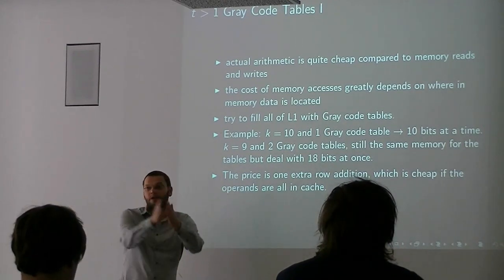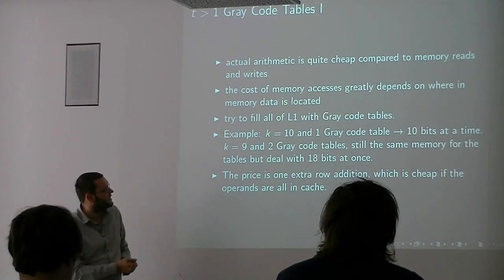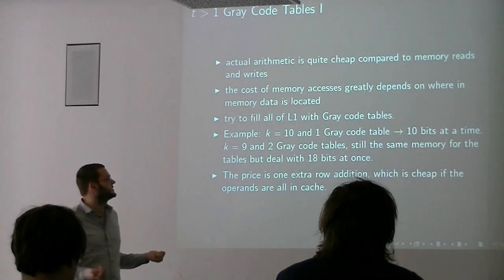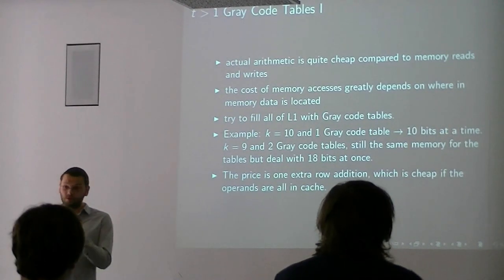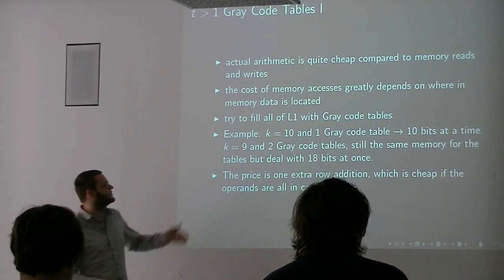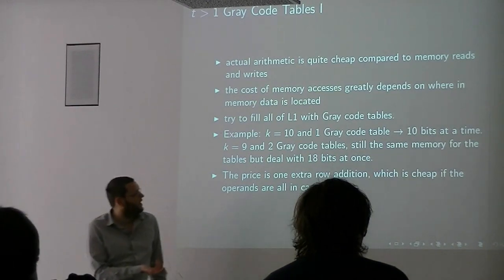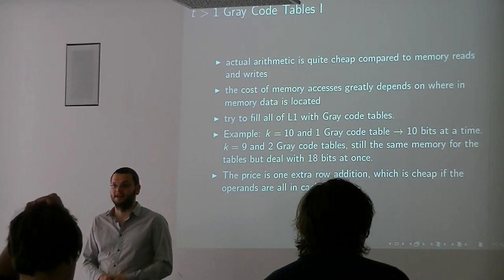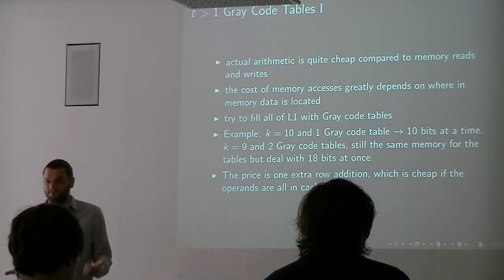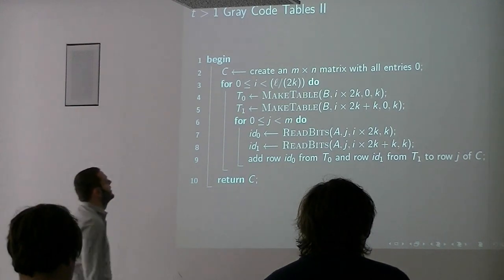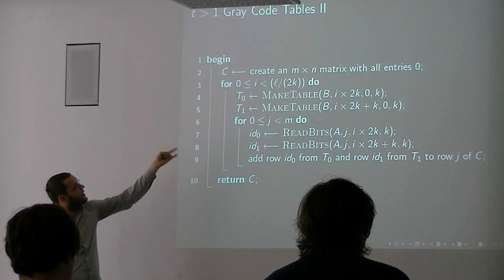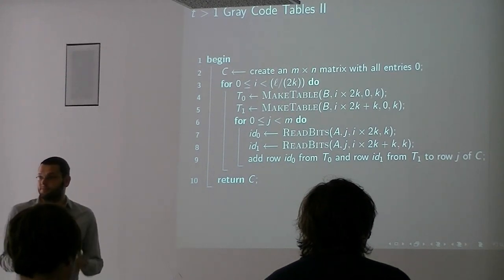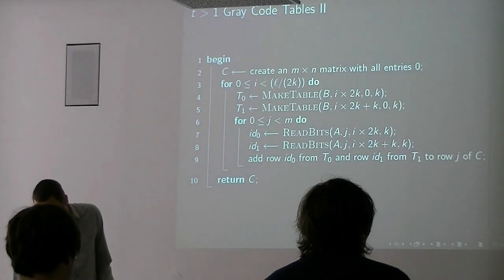Let's say, for example, we have a window width or stripe width of 10, and that means when we do one Gray code table, in one iteration we take care of 10 bits. Or we do a width of 9 and do two Gray code tables, which still takes the same memory because 2 times 2 to the 9 is 2 to the 10, but we can deal with 18 bits of course. But the problem now is we have to do an additional XOR. So there's not one big table, but we have two tables, and we have to add them. But an XOR is really cheap.